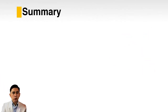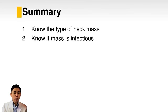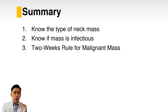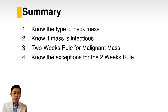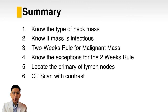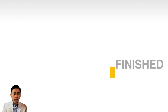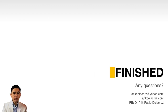In summary, the eight ways to approach a neck mass are: one, know the type of neck mass; two, know if it is infectious; three, follow the two-week rule for malignant masses; four, know the exceptions to the two-week rule; five, locate the primary of lymph nodes; six, do a CT scan with contrast; seven, don't hesitate to do fine needle aspiration biopsy; and eight, early referral to a specialist. Thank you everyone.